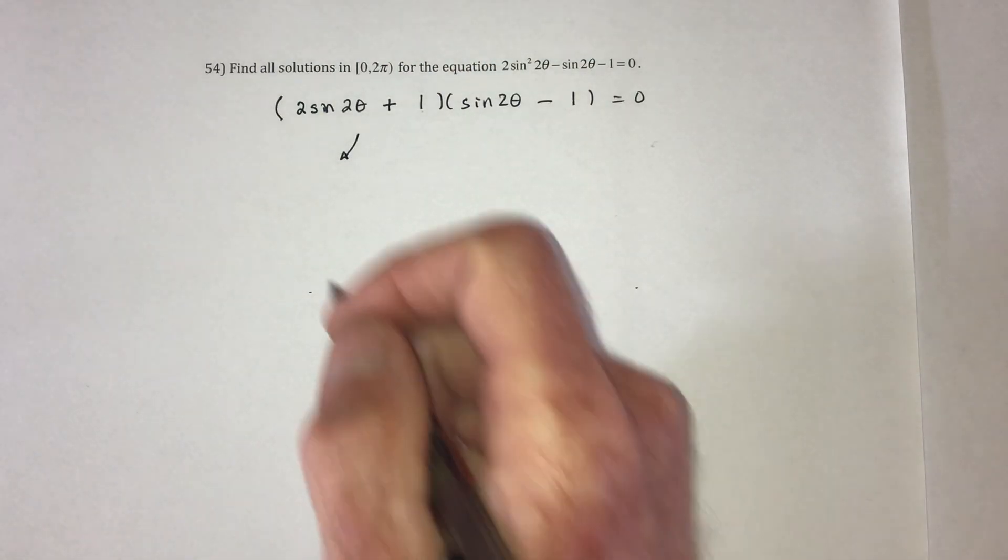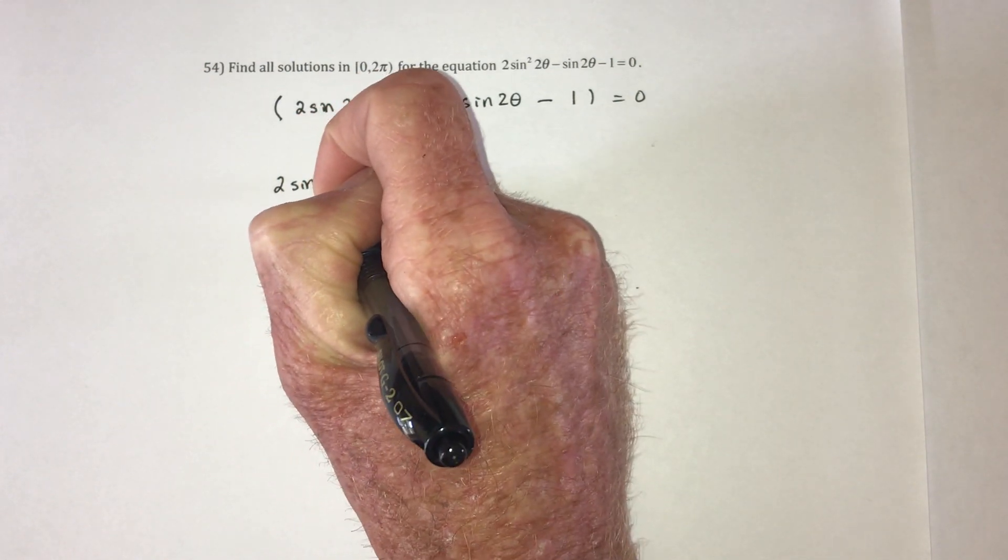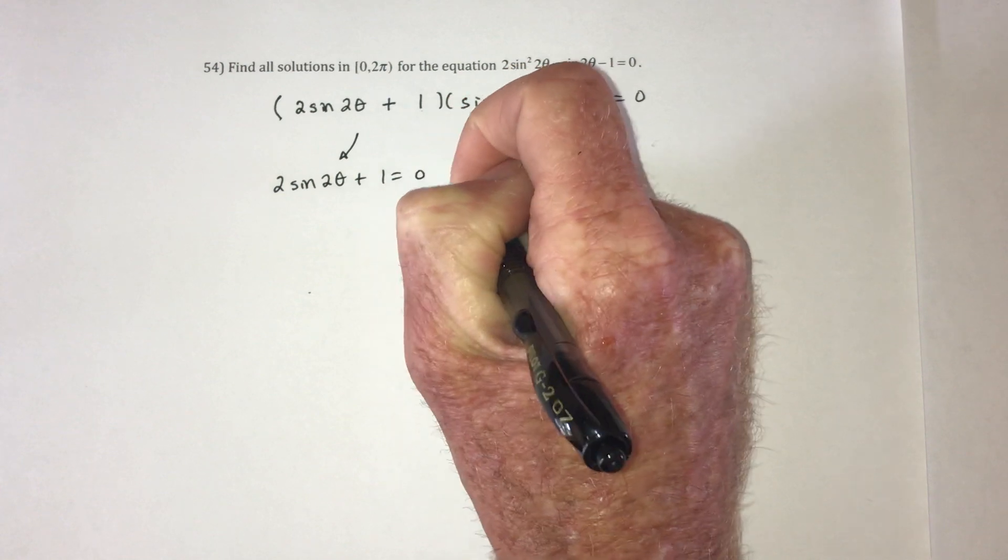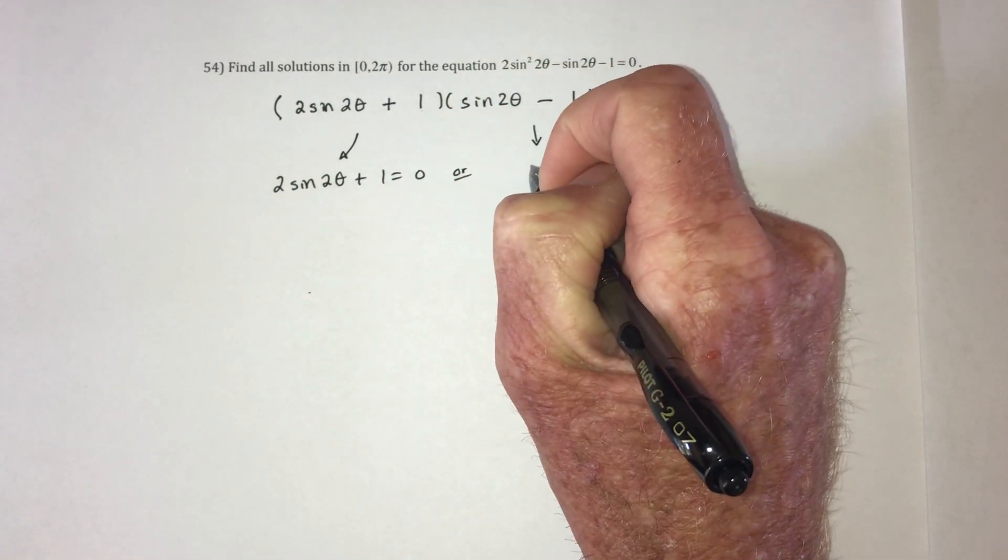Then, set this one equal to 0. So 2 sine of 2 theta plus 1 equals 0. Or the other possibility is set this one equal to 0.